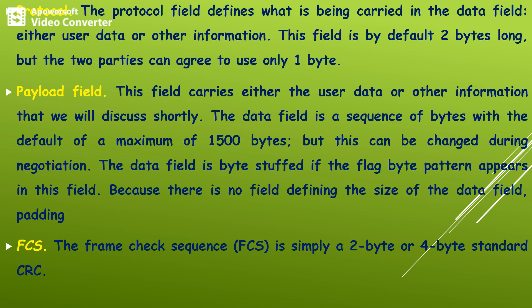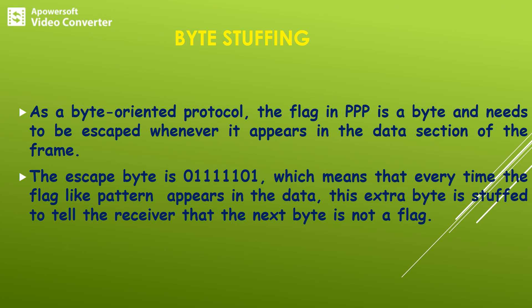The next field is FCS, that is frame check sequence, which is around 2 to 4 bytes in size for standard CRC. Since PPP is a byte-oriented protocol, in some instances the flag may appear in the actual data section of the frame. In such cases we need to use a special character called an escape character. The size of this escape character is one byte with the value 0, 1, 1, 1, 1, 1, 1, 0, 1. Every time a flag-like pattern appears in the data, we need to stuff one extra byte to tell the receiver that the next byte is not a flag value.